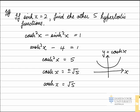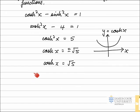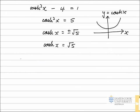From those two evaluations that we have now, sinh x and cosh x, we can use the definition of tanh x in terms of sinh and cosh to work it out. So tanh x, we know, is equal to sinh x divided by cosh x. So substituting the two values we have, this is equal to 2 divided by the square root of 5.